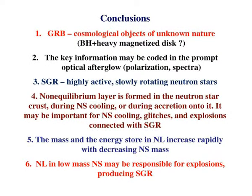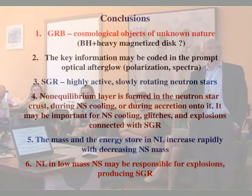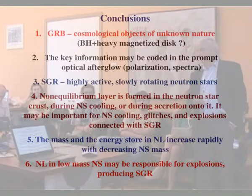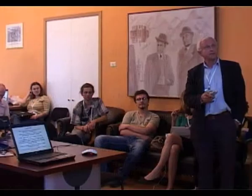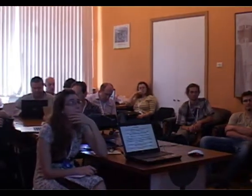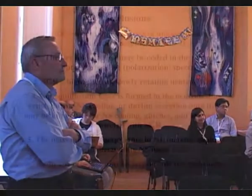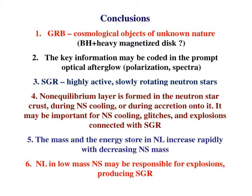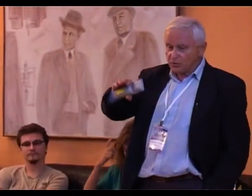In conclusion: gamma-ray bursts are cosmological objects of unknown nature — possibly a black hole plus a heavy magnetized disk. The key information may be coded in the prompt optical afterglow; if you measure polarization and spectra of prompt emission, you can find much more than from thousands of spectra of late afterglows. Soft repeaters are highly active and slowly rotating neutron stars. A non-equilibrium layer is formed in the neutron star crust during cooling or accretion, and may be important for glitches and explosions connected with soft repeaters. The mass and energy stored increases rapidly with decreasing neutron star mass, and the activity of soft repeaters can be connected with this non-equilibrium layer activity in lower-mass neutron stars.